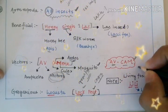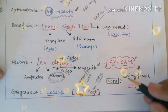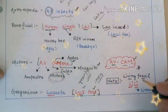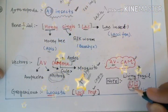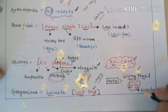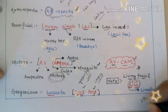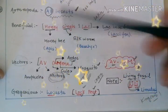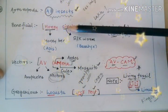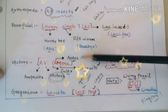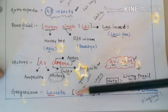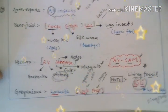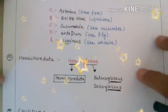There is a very important exam question: which Arthropod is called the living fossil? The trick to memorize that is 'Lily,' where Li means living and Li means Limulus, which is also known as king crab. So these are the examples of Arthropods divided into categories: beneficial — Honeysink Lack; vectors — AV Cam; gregarious — Locusta (lock pest); and living fossil — Lily, which is Limulus or king crab.